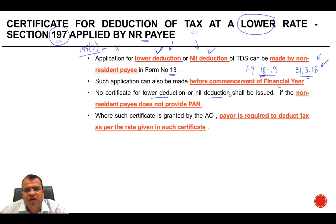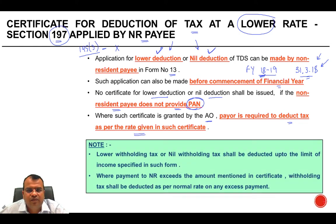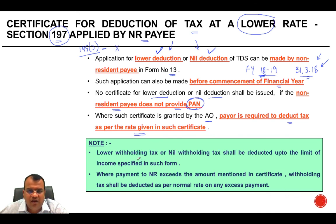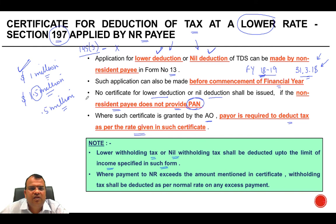No certificate for lower or nil deduction shall be issued if the non-resident payee does not provide a PAN. Where such a certificate is granted by the AO, the payer is required to deduct tax at the rate given in the certificate. The lower or nil withholding tax applies only up to the limit of income specified in the certificate. If you estimated $1 million but received $1.5 million, the extra $0.5 million is subject to tax at regular rates. Withholding tax shall be deducted at the normal rate on any excess payment beyond the amount mentioned in the certificate.